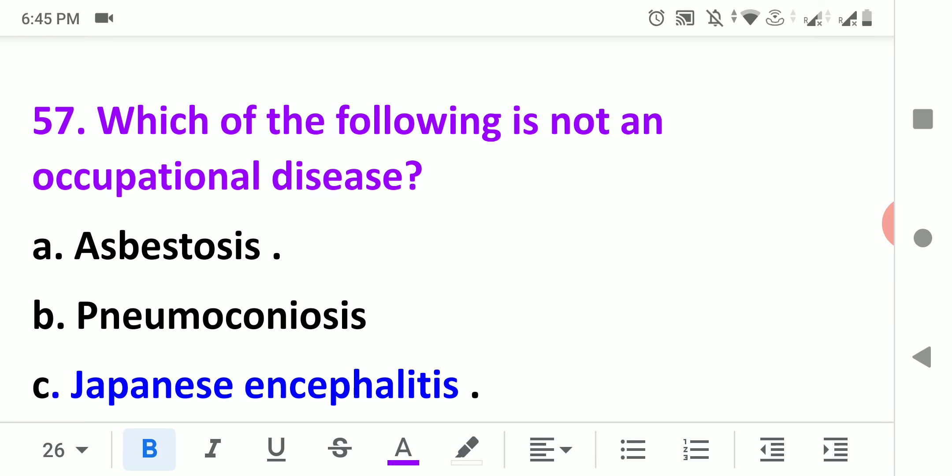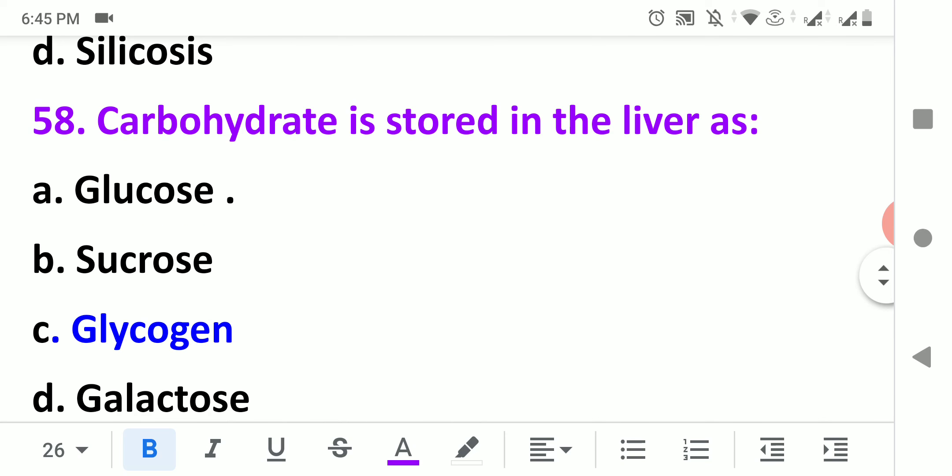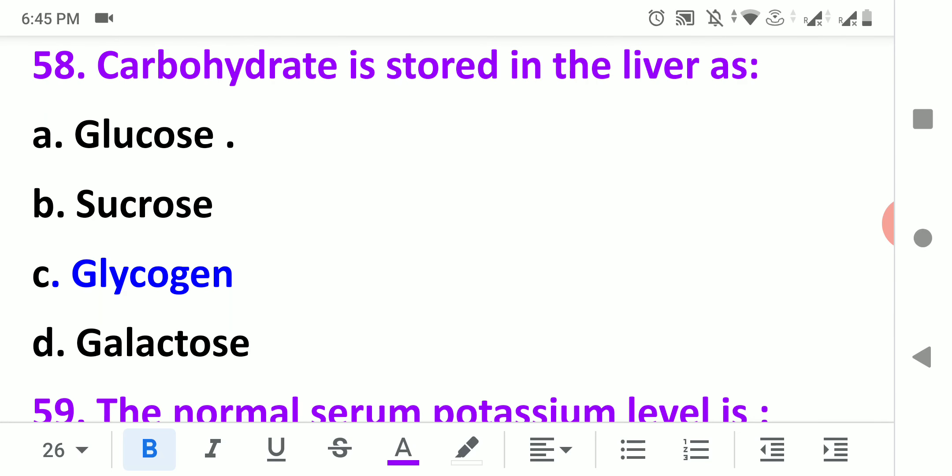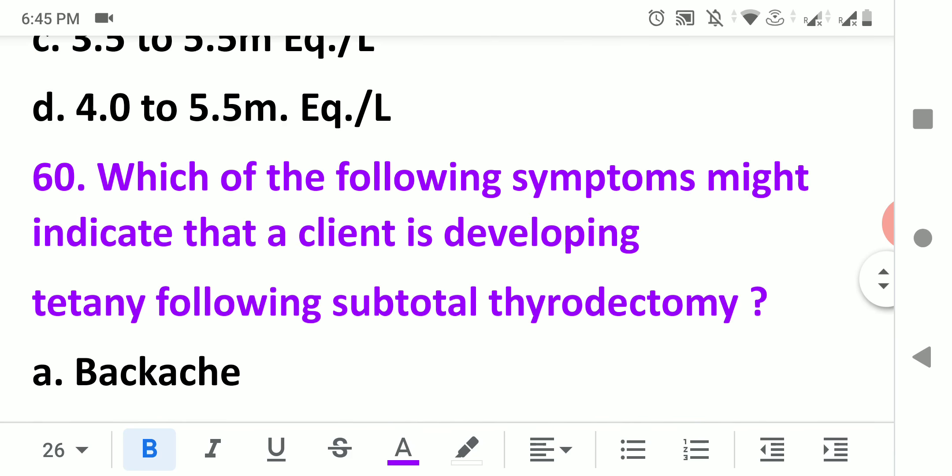Which of the following is not an occupational disease? Asbestosis, pneumoconiosis, and silicosis are three occupational diseases. Brain fever is not an occupational disease. Next, carbohydrate is stored in the liver as glycogen. The normal serum potassium level is 3 to 5 milliequivalent per liter.